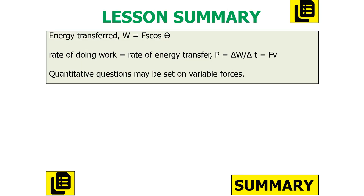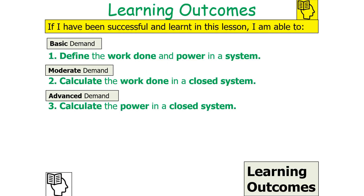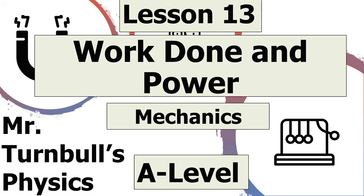To summarise: energy transferred equals work done, which is force times displacement times cosine of the angle. The rate of work done equals the rate of energy transfer, which is power — equal to work done divided by time, or force times velocity. We can use quantitative questions set on variable forces. Thank you for watching this lesson on work done and power, part of the mechanics topic in AQA A-level physics.